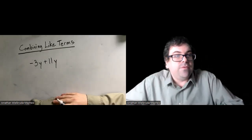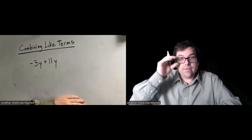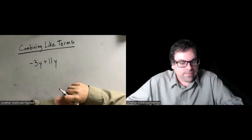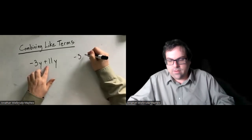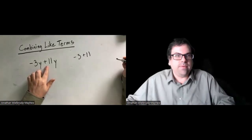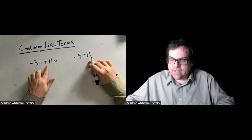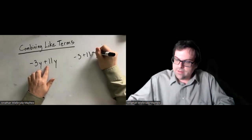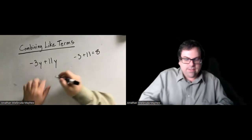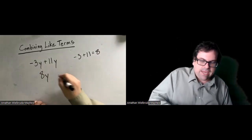Negative 3y plus 11y — we have negative 3 of them and we're adding 11 of them. Negative 3 plus 11 is positive 8. So we have positive 8 of them: 8y.